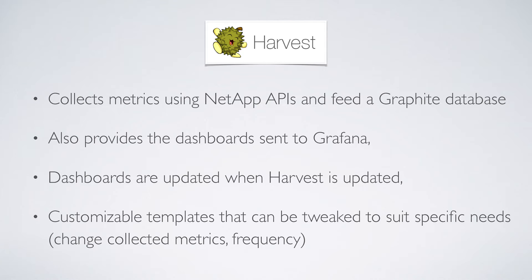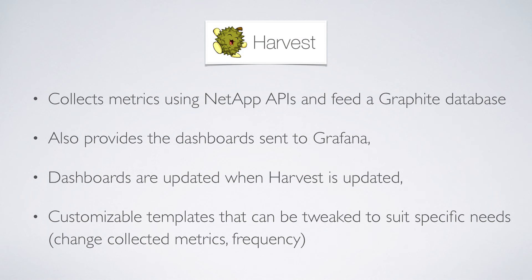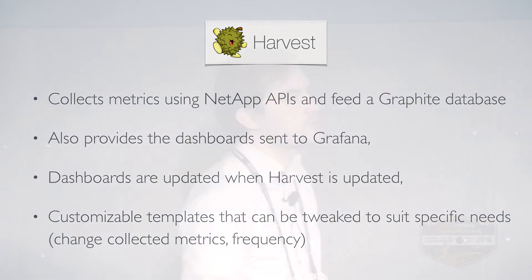Harvest is a Pearl daemon that runs and collects metrics in a customizable way. It provides dashboards and is packaged as a single script that's easy to install. It gets metrics from your NetApp clusters and legacy systems, pushing that into a Graphite time series DB, and also pushes the dashboards provided with Harvest, so when you upgrade Harvest, you're also upgrading the dashboards. It has customizable templates, since not every customer has the same needs — sometimes you need more granular data, sometimes a broader view.